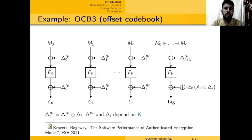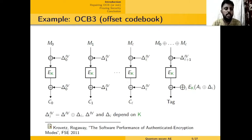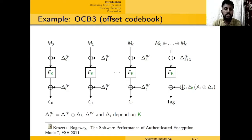A popular AE mode which achieves this rate-1 goal is the Offset Code Book, or OCB. We look at its present variant, OCB3. What it does is take the design of ECB (electronic code book), but before and after each block cipher call it adds an offset. This offset depends on the IV and on the block number. The interesting thing about OCB3 is that the offset delta of a certain block, delta_{IV,i}, is the XOR of two components: one which comes from the IV, and one which comes from the block index.